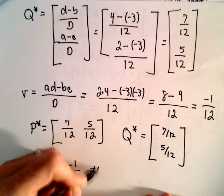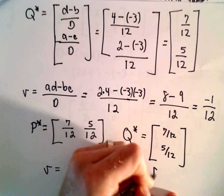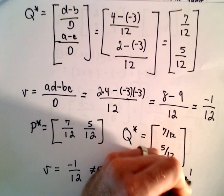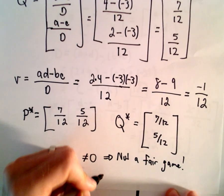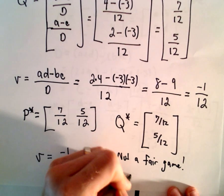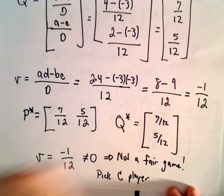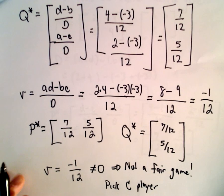So since this doesn't equal zero, that tells us that it's not a fair game. And in this case, assuming you want to maximize your earnings, it says that you would pick to be the column player, you would want to be the column player in this game if you want to win money in the long run.